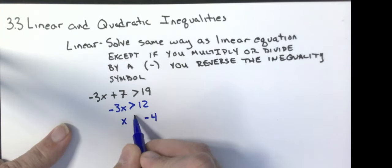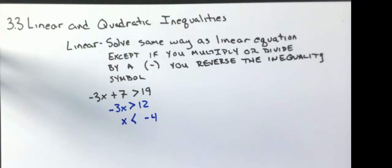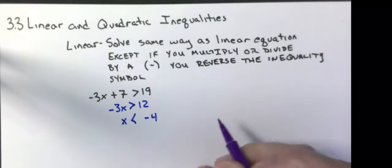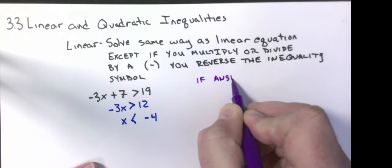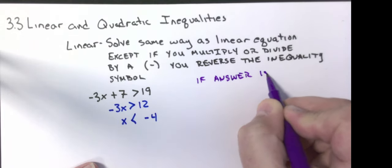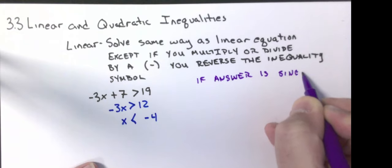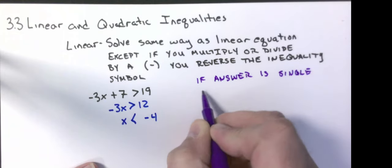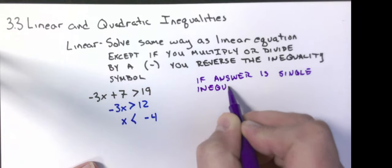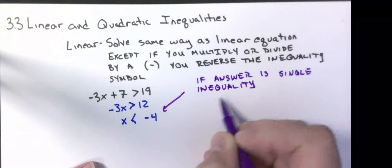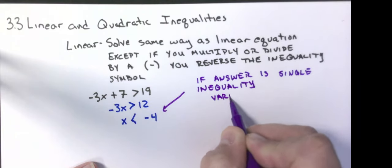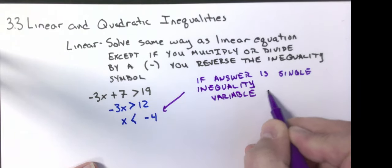And I have to flip the symbol — that would be my answer. For purposes of this class, if the answer is a single inequality with one variable, the variable goes on the left.